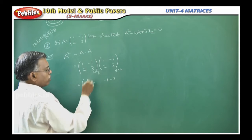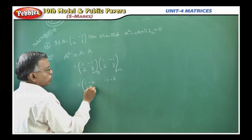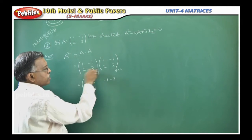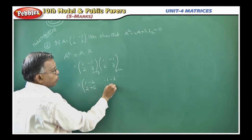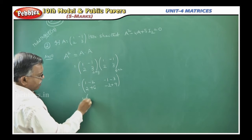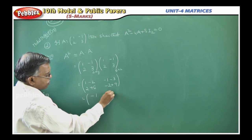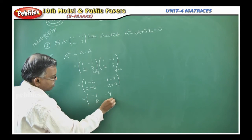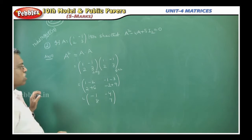Second row, first column, 2 into 1 is 2, 3 into 2 is 6, plus 6. Second row, second column, minus 2, plus 3 into 3 is 9. What is the answer here? Minus 1, minus 4, 8, 7. This is A square.